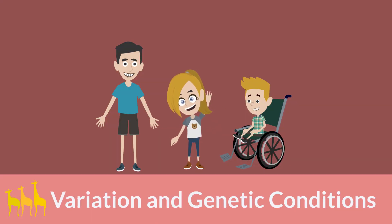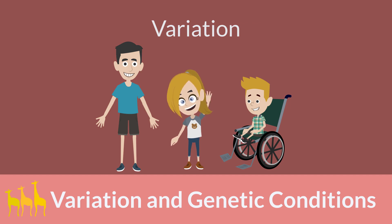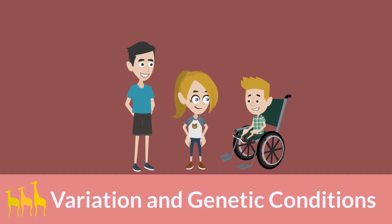Sarah and her brothers inherited similar genes from their parents, yet each of them was still born with genetic differences caused by genetic mutations. These differences are called variation. Variation accounts for the uniqueness in each person. Most variation is harmless, but some can cause other conditions. For example, Sarah's younger brother is diagnosed with spinal muscular atrophy, a genetic condition characterized by the weakening of muscles used for movement. This condition came about through genetic mutation at birth.